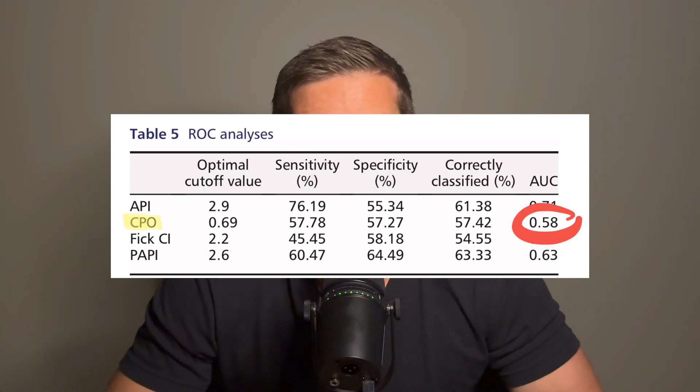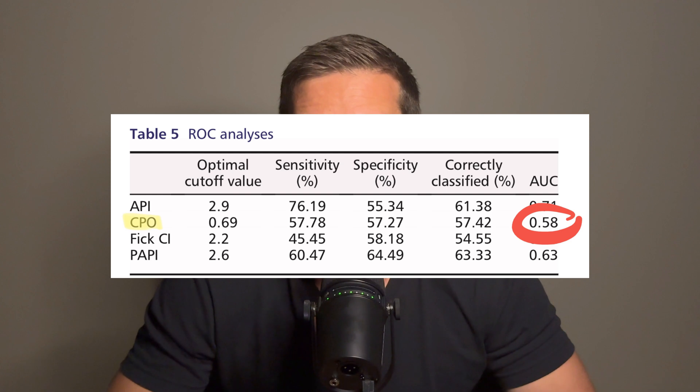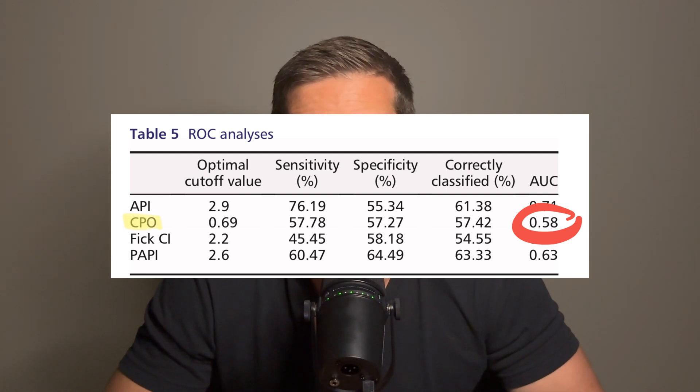To summarize those points: an API greater than or equal to 1.45 in patients with cardiogenic shock means they're likely to do okay. If the API is greater than or equal to 2.9 in patients with decompensated heart failure, that's associated with better outcomes.